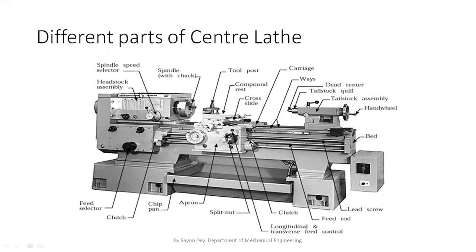On the left-hand side, this is called the head stock. This is called the tail stock. This is called the carriage, and in the carriage there are several parts — all shown in the picture. Another part is the chuck. The chuck is not a direct part of the lathe; it is an attachment of the head stock. The main function of the chuck is to hold the raw material. We hold our cutting tool in the tool post section. There are two rods: one is the feed rod and the other is the lead screw. Both are also shown in the picture.